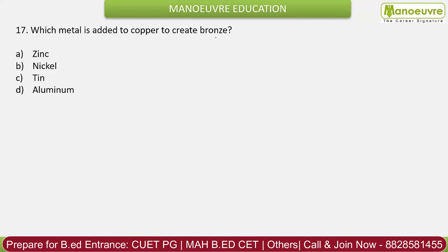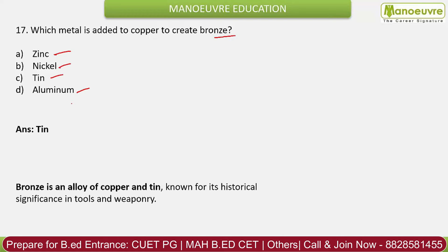Question 17: Which metal is added to copper to create bronze? Options: zinc, nickel, tin, aluminium. The correct answer is tin. Bronze is an alloy of copper and tin, known for its historical significance in tools and weaponry.